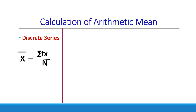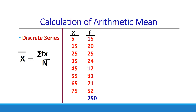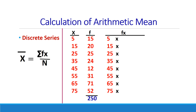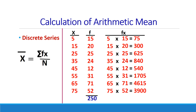Let us see how the calculation is done in the case of discrete series. The x values and their corresponding frequencies are given. The total of the frequencies, which is Σf, is considered as n in the case of both discrete and continuous series. We multiply the x values with their corresponding frequencies — for example, 5 is multiplied with 15, and 15 is multiplied with 20, and so on. These results are then totaled to get Σfx.